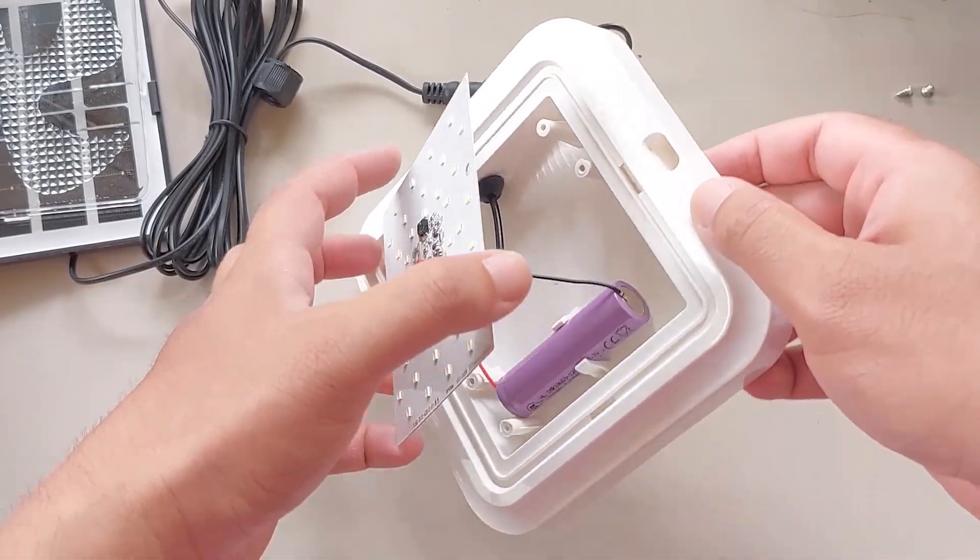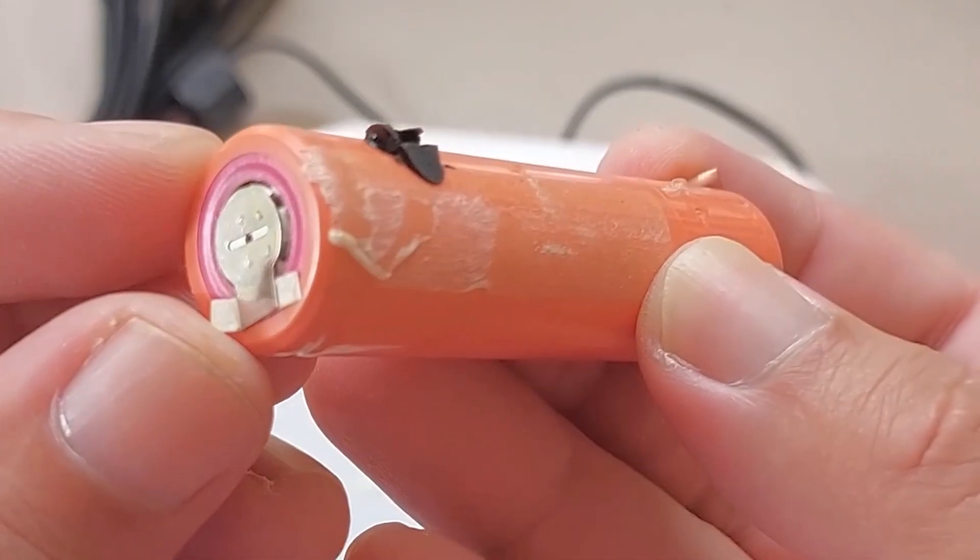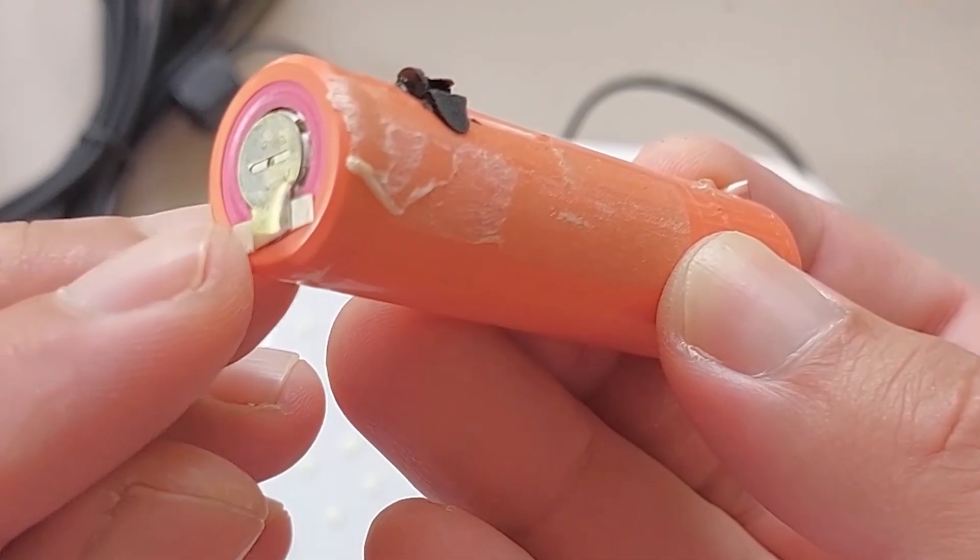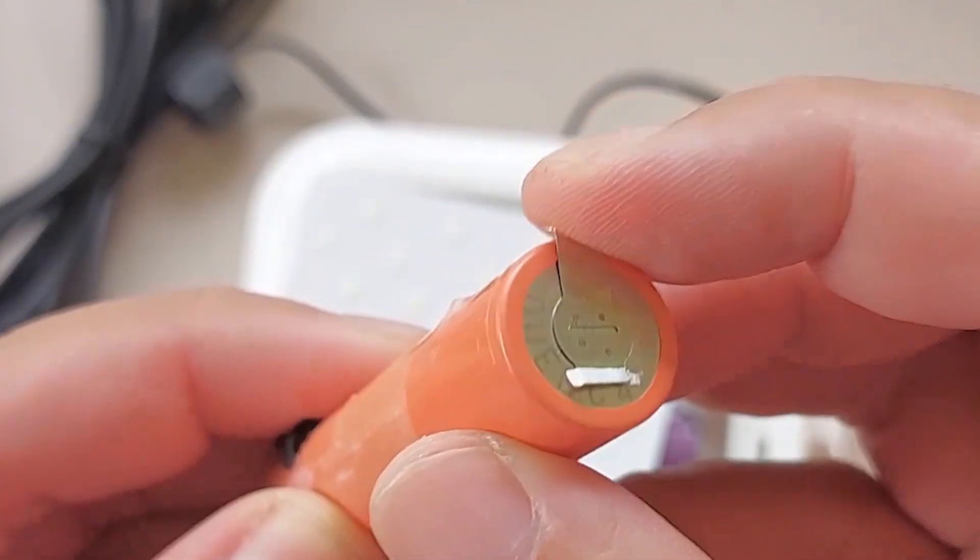The original 1200mAh battery is low quality so I will replace it with a better cell that I salvaged from a laptop battery. I left these nickel strips on the battery on purpose to make it easier to solder the wires later.